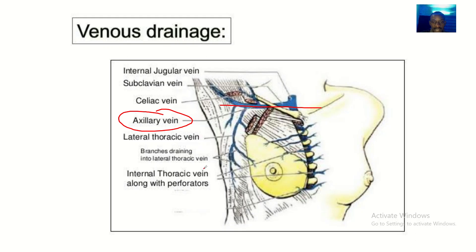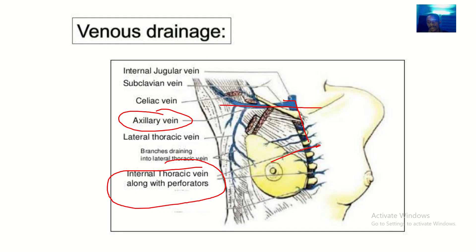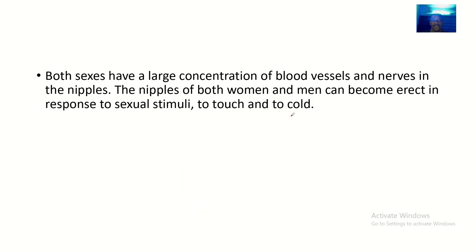There's some drainage to the internal thoracic vein and back to the axillary vein, as well as to the intercostal veins. The intercostal veins are the veins that are in between the costal bones.